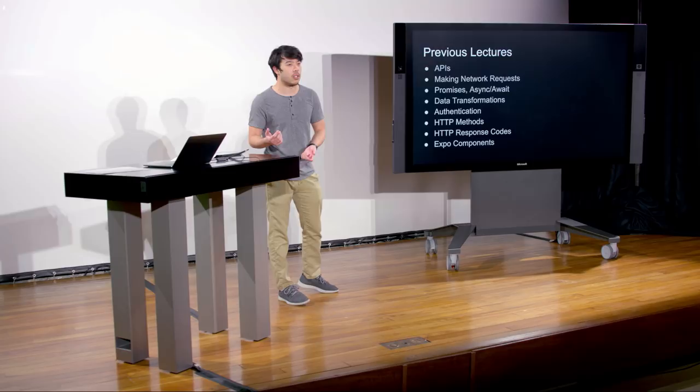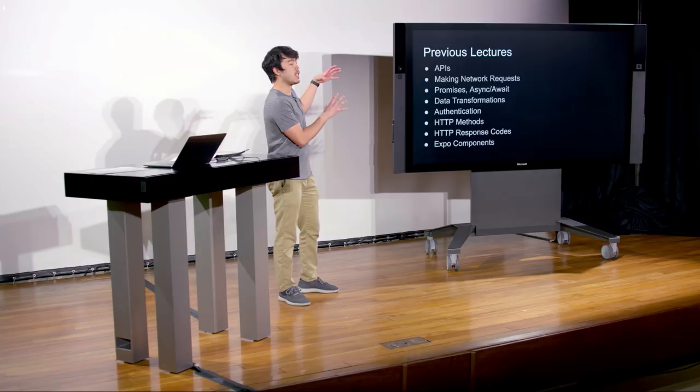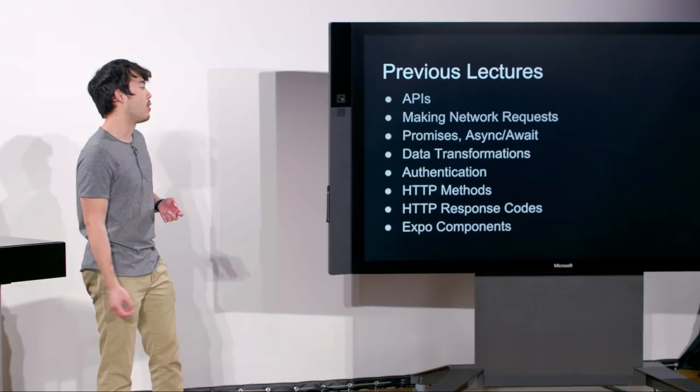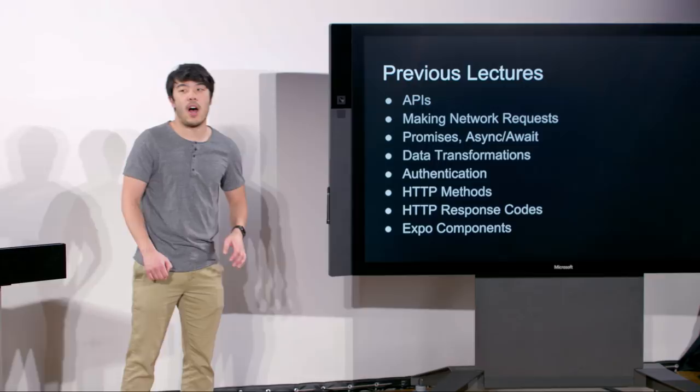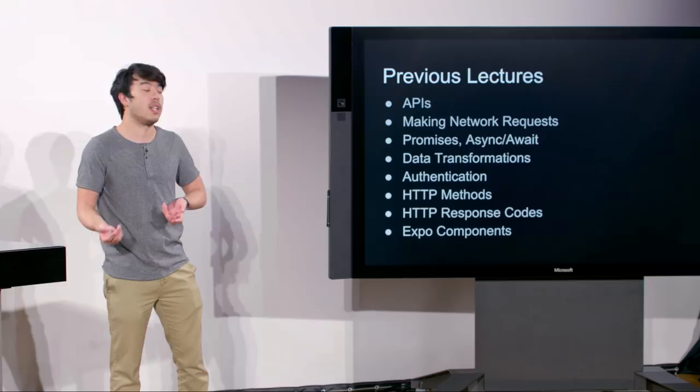We talked about how to transform data after you get it back from an API — it might not be exactly in the shape that you want, so we talked about a few different strategies to get it from the shape from the API to what we want in our application. We then talked about some simple authentication, meaning how do you ensure that users are who they say they are and how do you let them into your app. We talked about HTTP methods and response codes, which let you know if a request succeeded or failed and why. And lastly, we had Charlie Cheever as our guest to talk about Expo components.